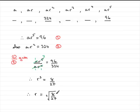but really it's so easy you could do it as the cube root of 8 over the cube root of 27. The cube root of 8 is 2 and the cube root of 27 is 3. So the common ratio is 2 thirds.